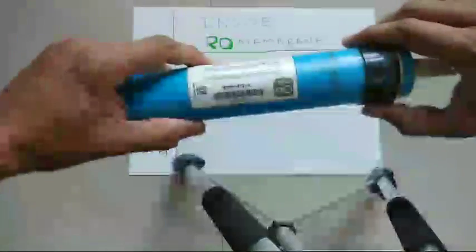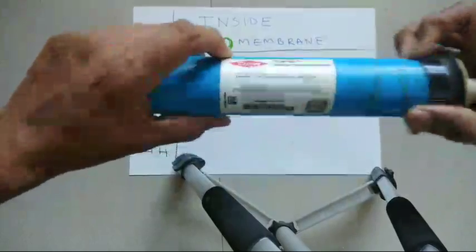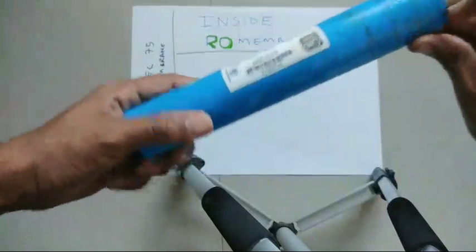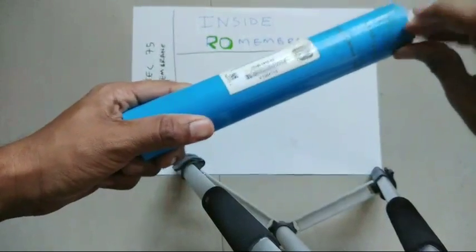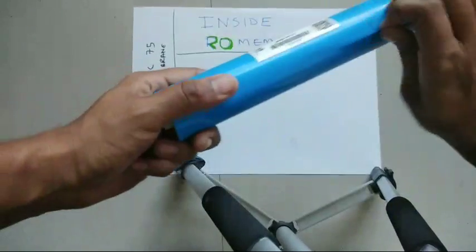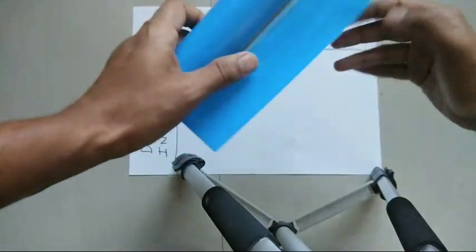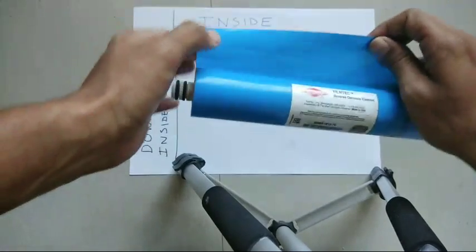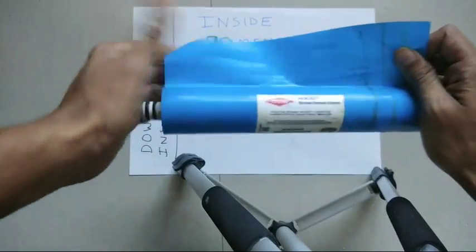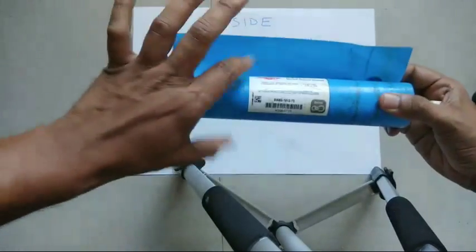Before, I had done an opening of a Dow membrane which was manufactured in India. This one is manufactured in USA, so let's see what is different. Whenever the term BW, that is brackish water, is used, the sheet is different for brackish water. Whereas for TW, that is tap water, the outer sheet is different. The inner material is totally the same.